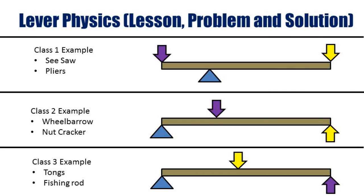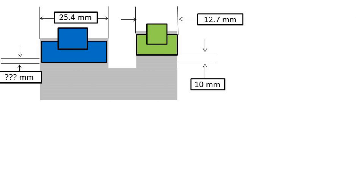We talked about levers in a previous video so I am going to concentrate on the hydraulic portion of the trolley jack. So let's say we have a small piston with a diameter of 12.7mm and has a 10mm stroke. This piston is connected to a large piston which has a diameter of 25.4mm.